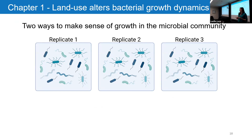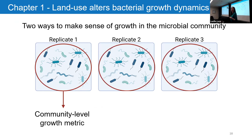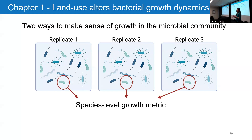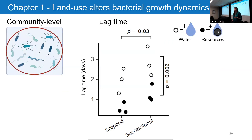I looked at these growth metrics in two different ways: a broad community-level resolution and a fine species-level resolution. At the community level I took a growth metric like growth rate and averaged it for every single growing member in that sample. The other way was to look species by species, averaging across replicates for an individual species. Looking at the community level data for crop and successional soils, with closed circles for samples where I added water plus carbon and open circles for just water, lag time was significantly affected by both land use and carbon addition — microbes took longer to start growing in the successional soil and without added carbon.